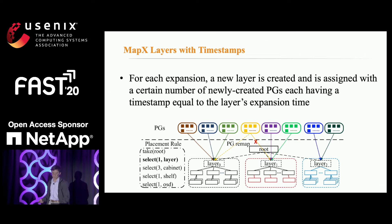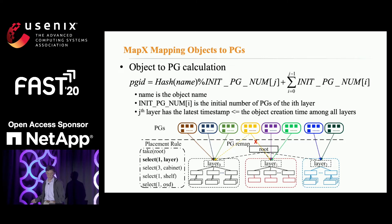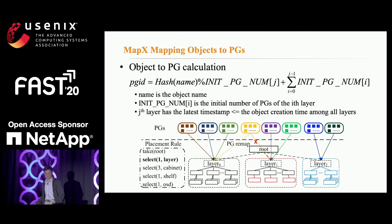In each expansion, the new layer is assigned a certain number of newly created empty PGs, each having a timestamp T_PGs equal to the layer's expansion time. When writing or reading an object O with creation timestamp T_O, we first compute the PG ID of O's PG by the formula shown in the slide, where T_O is maintained as high-level metadata. Note that although PGs might be remapped to other layers during load balancing rebalancing, the initial PG number per layer is constant, and thus the mapping from objects to PGs is immutable.